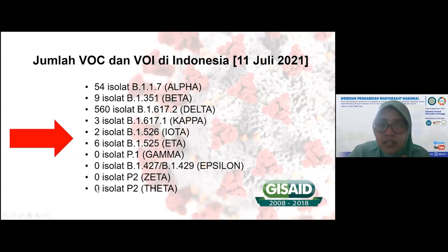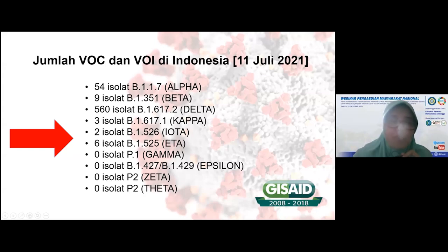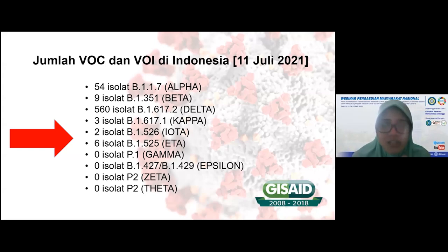Ini adalah virus-virus yang saat ini beredar di Indonesia: 54 isolat varian alpha, 9 isolat varian beta, 560 isolat varian delta. Ada juga varian kappa, iota, dan eta. Untuk yang tiga ini sepertinya tidak terlalu mewabah, ditemukan di daerah-daerah khusus. Sampai dengan 11 Juli, data di GISAID tidak ada laporan untuk varian gamma, epsilon, dan zeta. Tapi kita harus masih waspada karena masih ada trafik antara orang luar Indonesia masuk ke Indonesia.